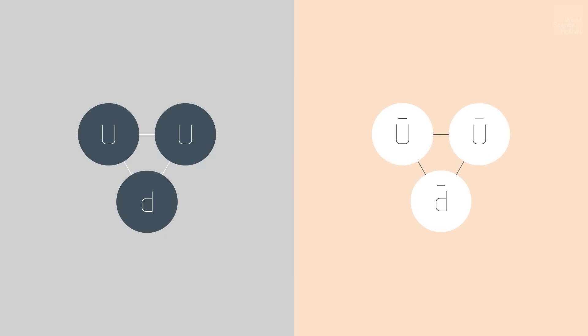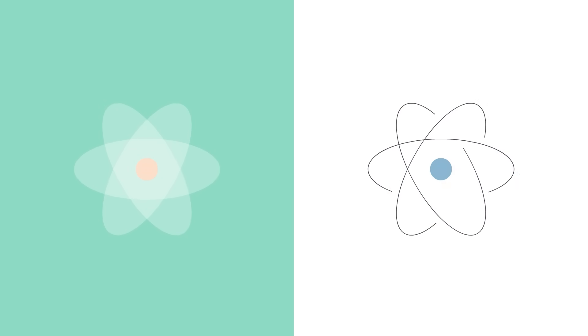Quarks would have anti-quarks. Protons would have anti-protons. And yes, you can even have anti-atoms — a complete shadow world made from antimatter, built using the very same particles but all with their charges reversed.